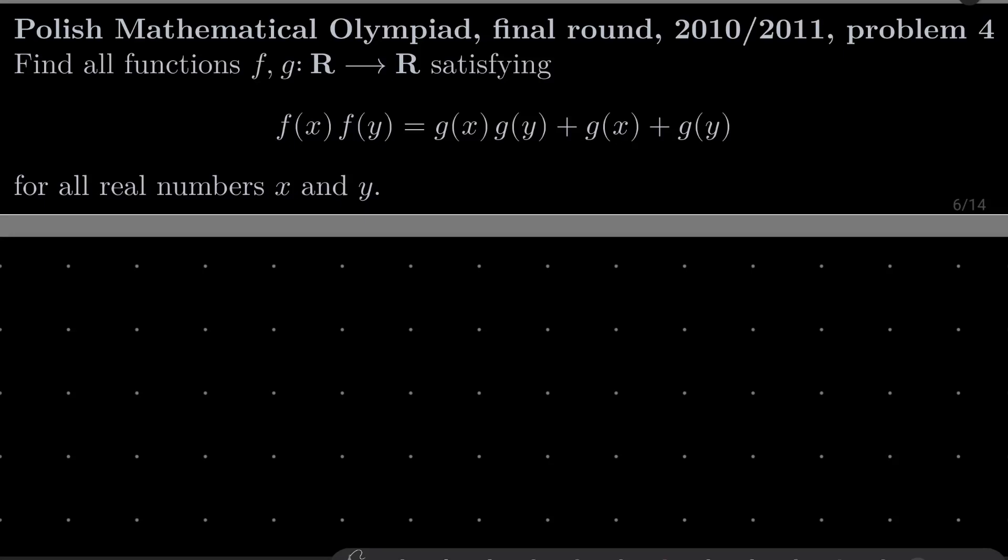Hello friends! In this video I'd like to solve the following problem from the Polish Mathematical Olympiad final round 2011, problem number 4. We wish to find all functions f and g from the set of real numbers into itself satisfying f(x) · f(y) = g(x)·g(y) + g(x) + g(y) for all real numbers x and y.